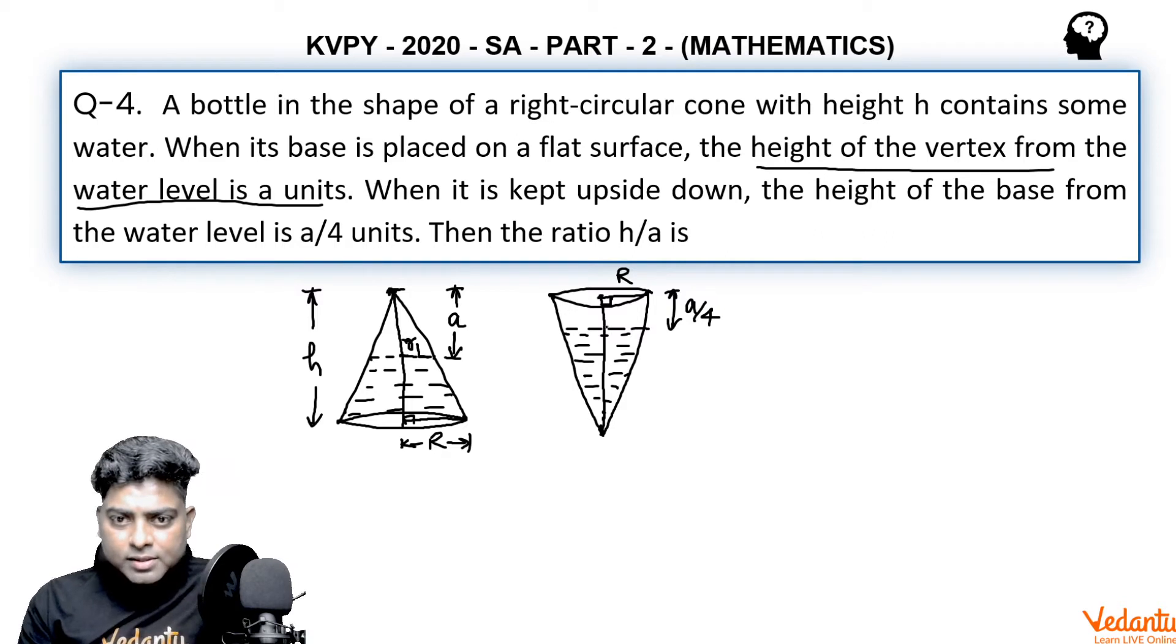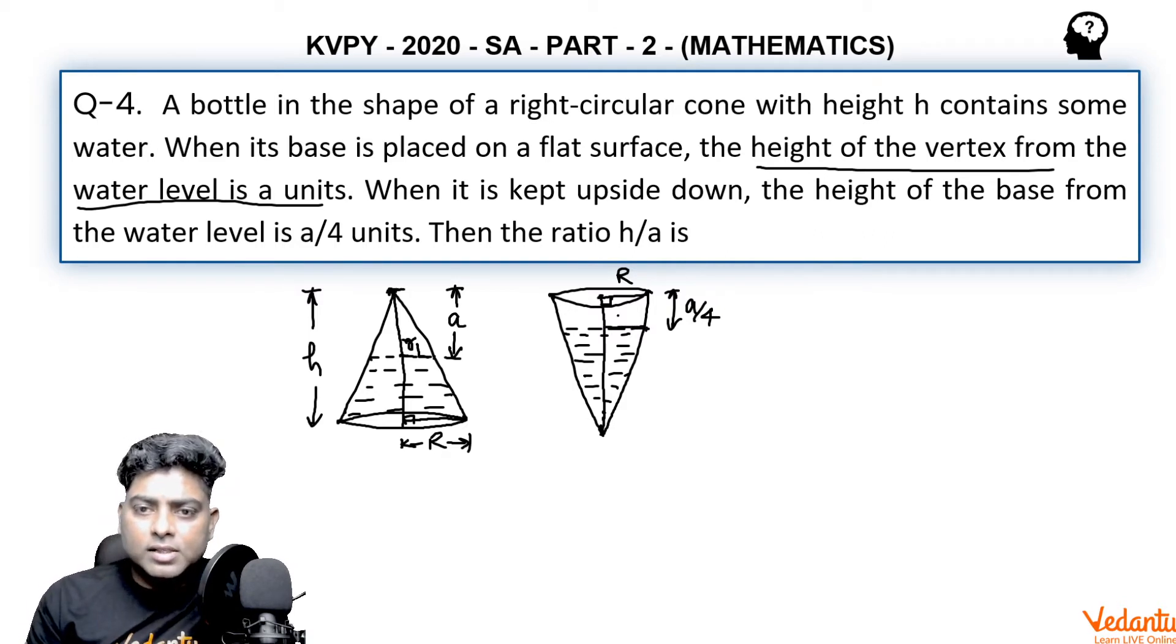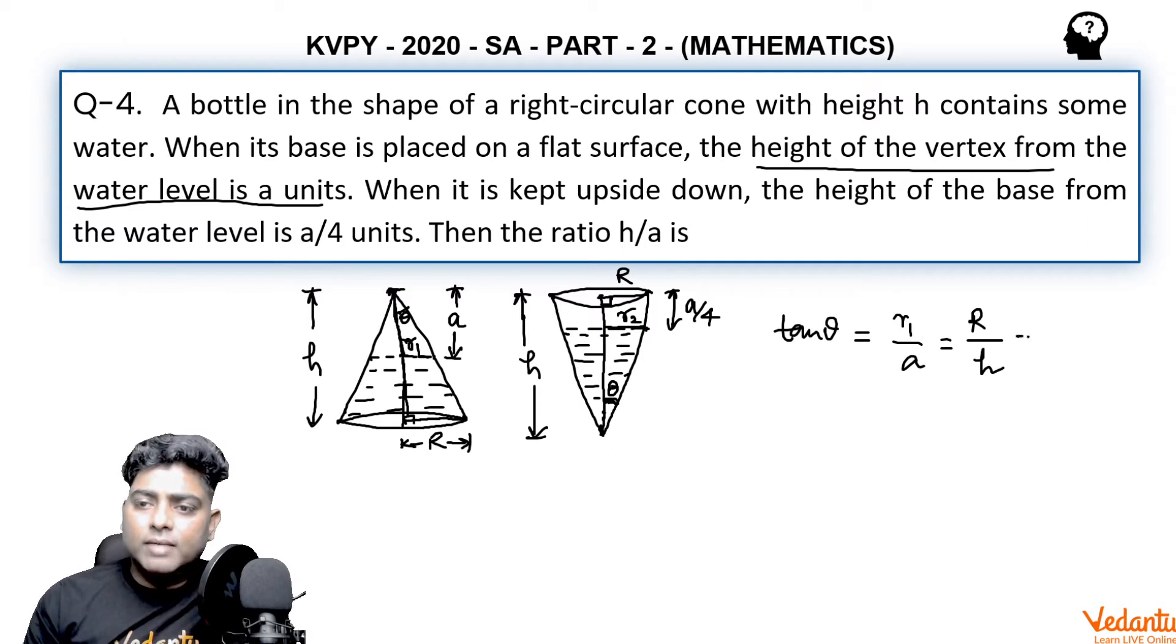At the water level, the radius is r2, small r2. If I take this angle to be theta, then here again it is theta. So we can write tan theta from the first smaller triangle as r1 upon a, and from the bigger triangle it is capital R upon h.